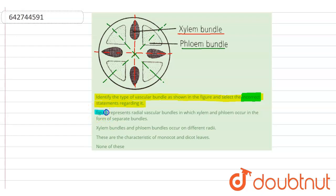The statement says the figure represents radial vascular bundle in which xylem and phloem occur in form of separate bundles. So they are telling us it's a radial vascular bundle and they are separate bundles. As you can see in the diagram, xylem is on different radii and phloem is on different radii, so this statement is true for the diagram.